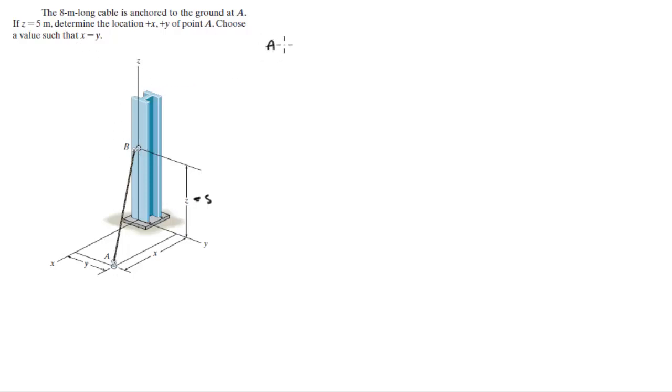For this problem, first I find all the position vectors. For point A, it's X*i + Y*j + 0*k, which are the values we're trying to find. But since X equals Y, I'm going to write it as X*i + X*j + 0*k, where X is the value we're finding.